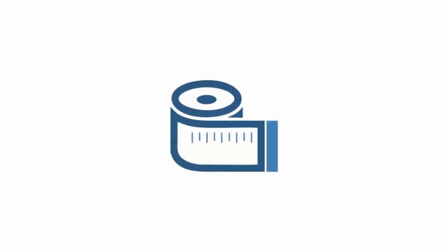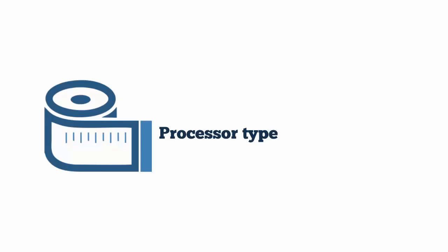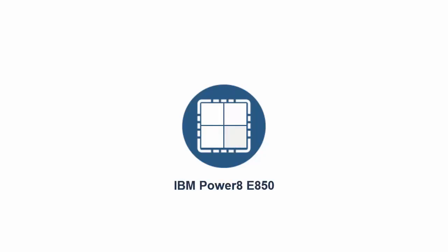A processor value unit, or PVU, is a unit of measure used to license IBM software. The number of consumed PVUs depends on two factors: the type of the processor on the server where the product is installed, and the total number of processor cores available to the product. For PVU-based licensing, IBM defines a processor as a processor core on a chip. A specific number of PVUs is assigned per core for each processor type. For example, the IBM Power8 processor model E850 is assigned 100 PVUs per processor core. This information is provided in the PVU table.